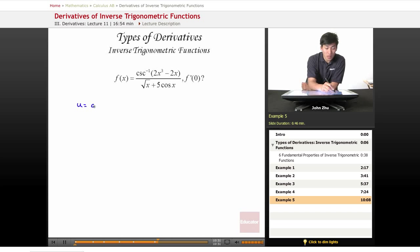U equals cosecant inverse of 2x cubed minus 2x. Well, what is du dx? Well, we have this term inside the middle, inside cosecant inverse.